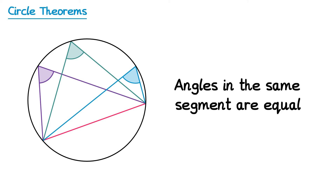If we draw a second angle or even a third, then all of these angles must be the same size because they come from this chord and they're in the same segment. So if the purple one was 68 degrees, the green one would be as well and so would the blue one. Sometimes this theorem is drawn without the red chord and the property still holds.